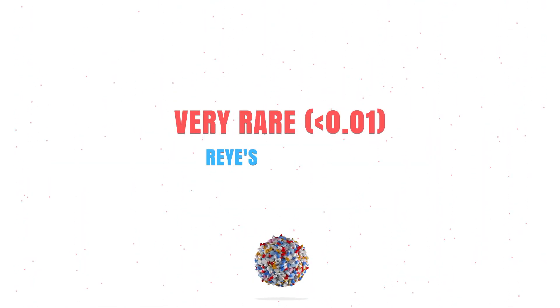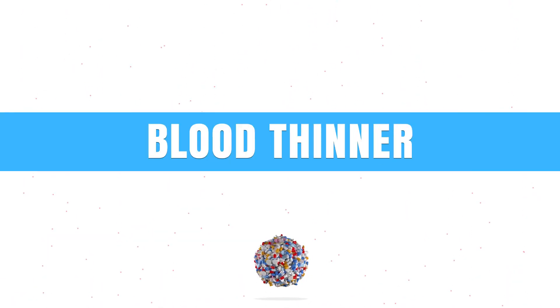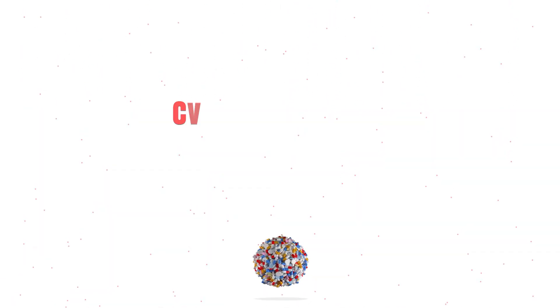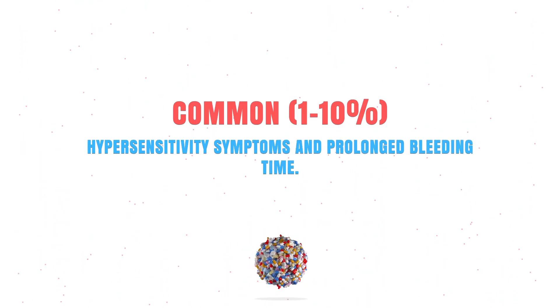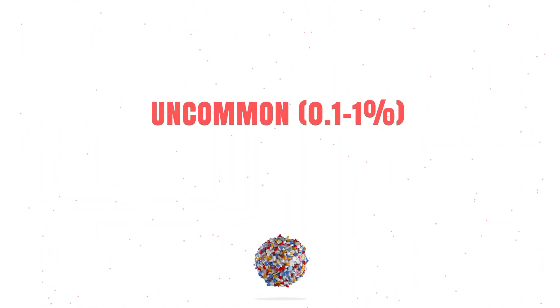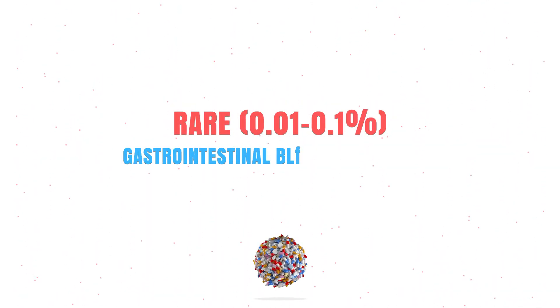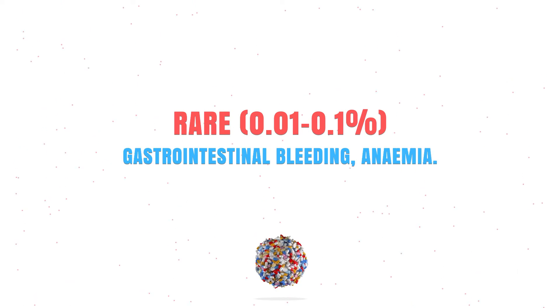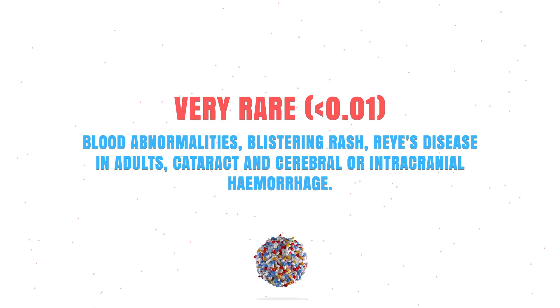Very rarely, aspirin can lead to Reye's syndrome. If you're using aspirin as a blood thinner, it could cause the following side effects: commonly it might cause a hypersensitivity reaction; uncommonly it could cause nausea, vomiting, or diarrhea; rarely it might cause gastrointestinal bleeding; and very rarely it could cause abnormalities in your blood or a blistering rash.